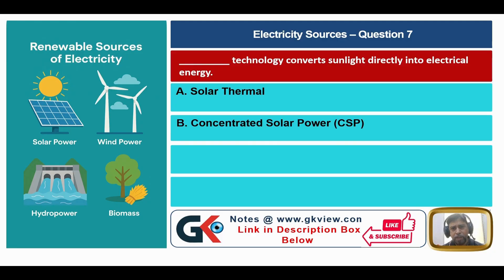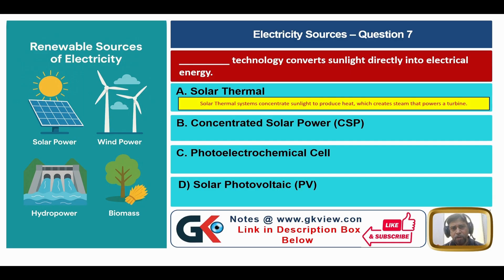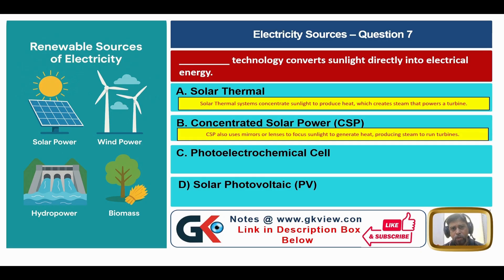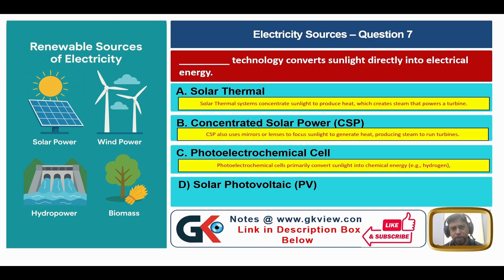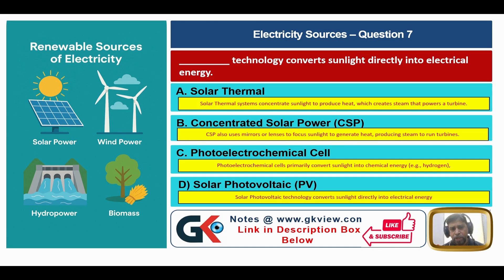Question number seven: which technology converts sunlight directly into electrical energy? A) solar thermal, B) concentrated solar power (CSP), C) photo electrochemical cell, D) solar photovoltaic (PV). Solar thermal systems concentrate sunlight to produce heat, which creates steam that powers a turbine. CSP also uses mirrors and lenses to focus sunlight to generate heat and produce steam to run turbines. Photo electrochemical cells primarily convert sunlight into chemical energy like hydrogen. Solar photovoltaic technology converts sunlight directly into electrical energy, so the answer is D.